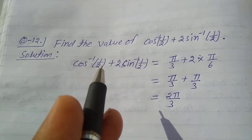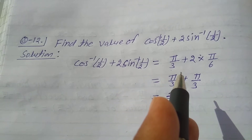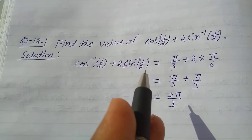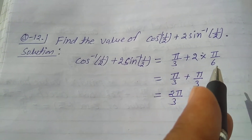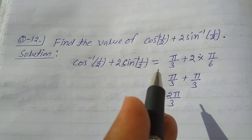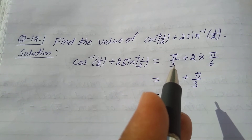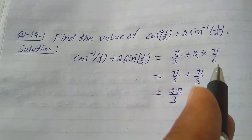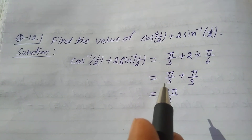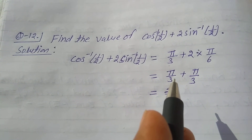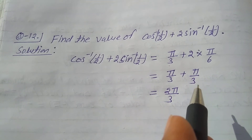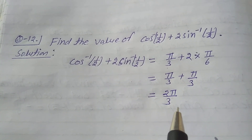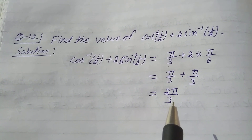cos inverse 1 by 2 value is pi by 3, and sin inverse 1 by 2 value is pi by 6. So it is equal to pi by 3 plus 2 into pi by 6, which equals pi by 3 plus pi by 3, equal to 2 pi by 3. That is the solution.